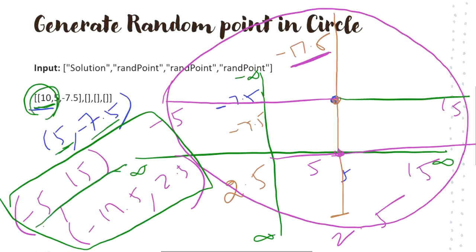Once our random points are calculated, we are going to check every time whether the point is placed on the circumference or inside the range of the radius. If that is the case, we are going to send the output. Let's check the code now.